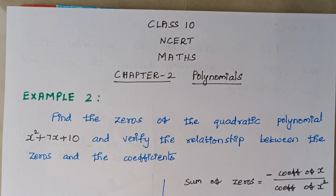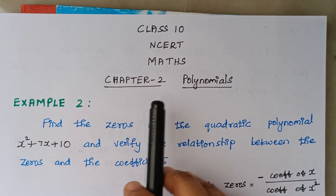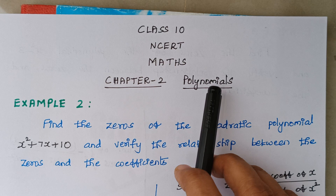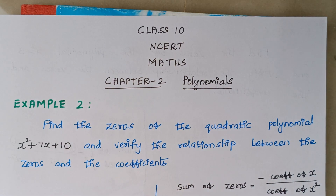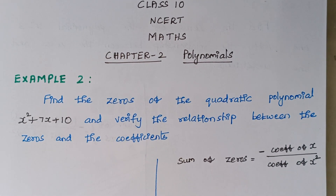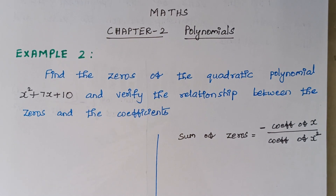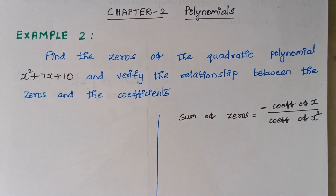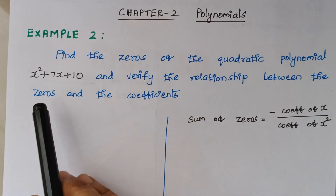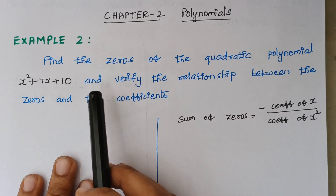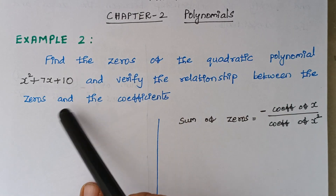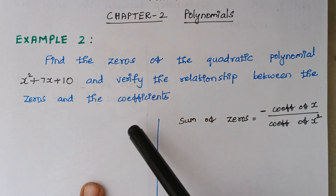Hello viewers, I am Kausalya. Today we are going to solve another problem in chapter 2, Polynomials, in NCERT Maths class 10. The problem is: find the zeros of the quadratic polynomial x² + 7x + 10, and verify the relationship between the zeros and the coefficients.